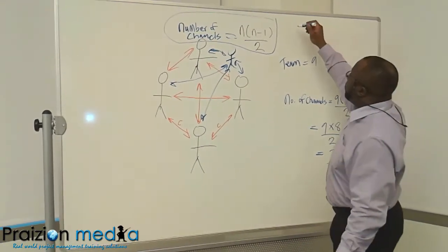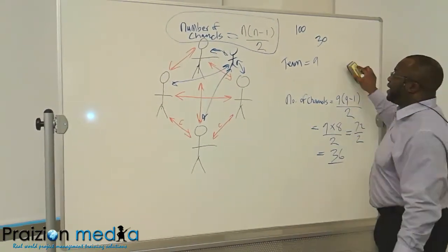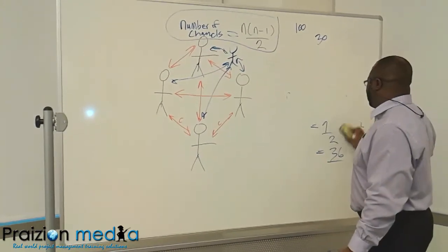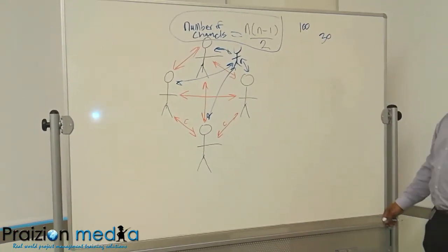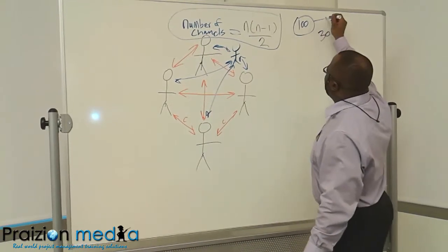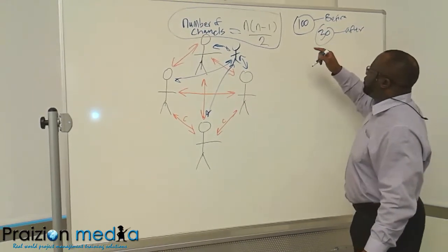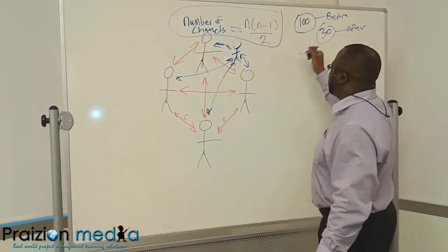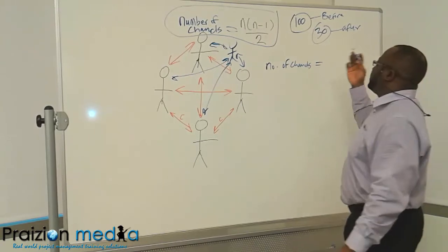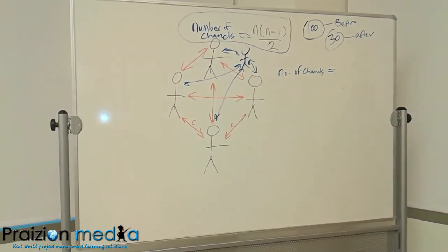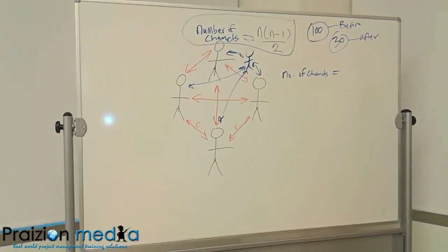And other times they could say you were on a project and there were 100 people, and then 30 people left. How many less channels of communication are there? So you were on a project, there were 100 people, 30 people left. How many less channels are there? So that's the before, and this is the after. So if there were 100 people at first, it could be 100 people including the PM. The PM is already in the number.